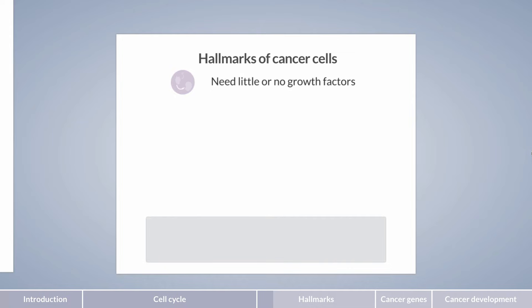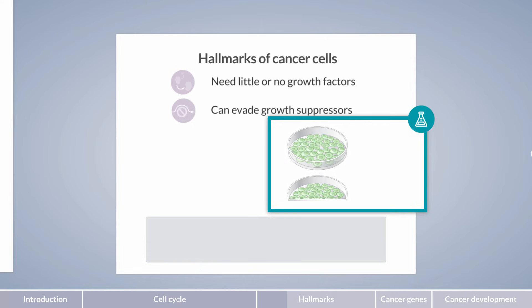First, cancer cells are capable of sustaining proliferative signaling in the absence of growth factors. In other words, they are able to enter the cell cycle without requiring positive external signals. Second, cancer cells are able to evade growth suppressors. Let's use an example here. Non-tumorous cells grown in a petri dish would proliferate until a single layer is formed that covers the bottom of the dish. A phenomenon known as contact inhibition would then prevent the cells from further proliferation.